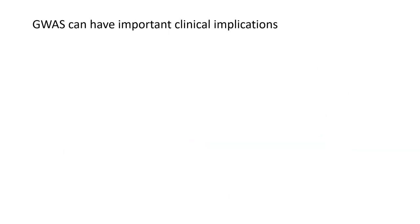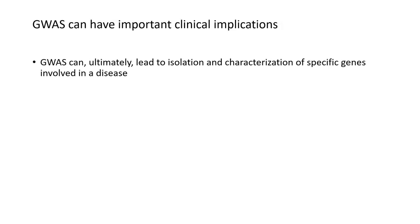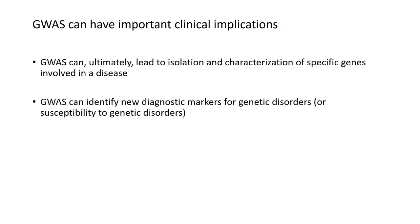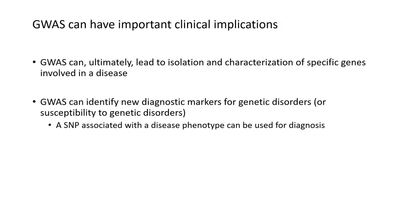While GWAS on its own cannot tell us exactly which gene is causing disease, it can push us in the right direction. GWAS is the first step that leads to the isolation and ultimate characterization of genes involved in disease. It points us in the right direction, gives us chromosomal locations to start with, and we hope to find genes in those locations with an impact on disease. GWAS also gives us new diagnostic markers for genetic disorders — we can use SNPs to assess if someone is predisposed for a particular disorder, even before the disease manifests.